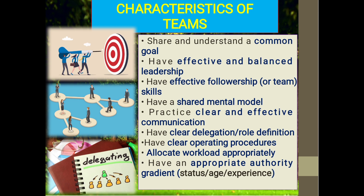And have an appropriate authority gradient — that is status, age, and experience. इन सारे points को detail में upcoming videos में discuss करेंगे। Appropriate authority gradient का मतलब है — बहुत ज़्यादा experienced बंदे को juniors properly follow नहीं कर रहे, या कोई junior उसके ऊपर है — तो properly काम नहीं हो पाता। यह एक important factor है जो team की characteristics को enhance करने में support करता है। Thank you.